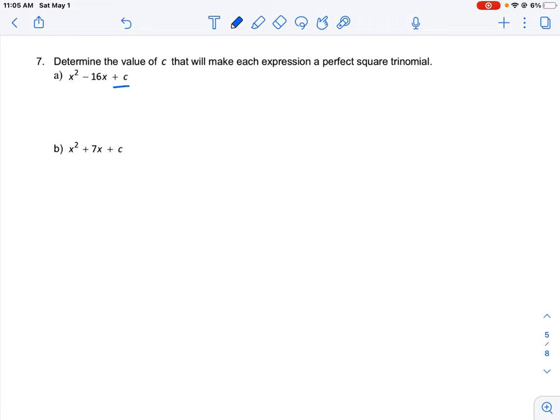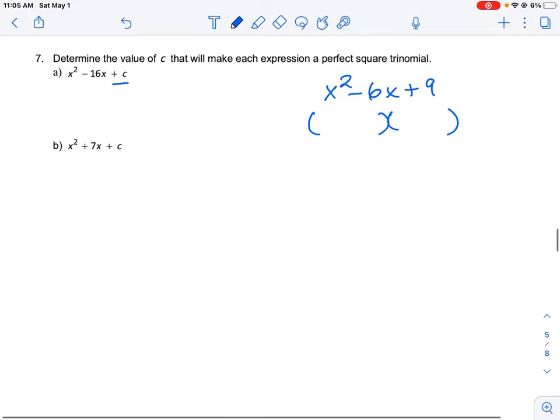So we call this a perfect square trinomial. The first thing before we look at this question is just to kind of take a step back and understand what a perfect square trinomial is. So if you had this expression x squared minus 6x plus 9, and you attempted to factor this into a product of two binomials, two terms, we would find that we could say x squared is going to be simply x times x.